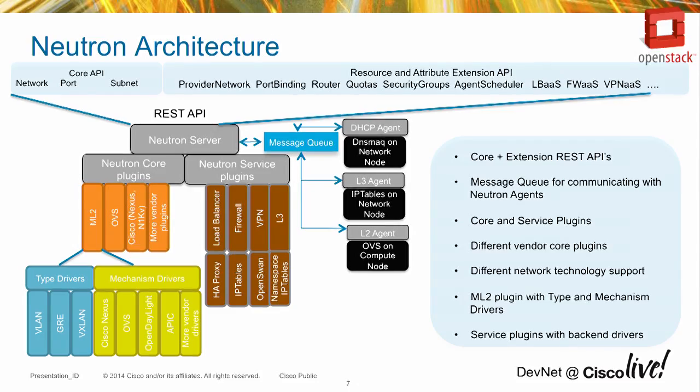Now let's look at the Neutron service, which is the OpenStack networking service. At the high level, every service has a REST API layer. The core constructs in the REST API are networks, subnets, and ports. A network is basically a layer 2 segment — when a tenant wants all its virtual machines to communicate on a layer 2 segment, you send a REST API request to Neutron to create a network, and that provisions the infrastructure so tenants have connectivity when they come up on that network.